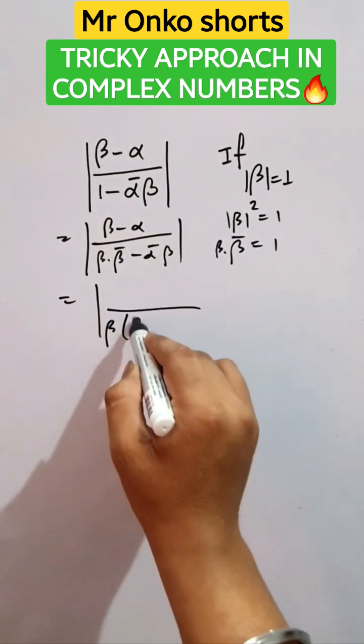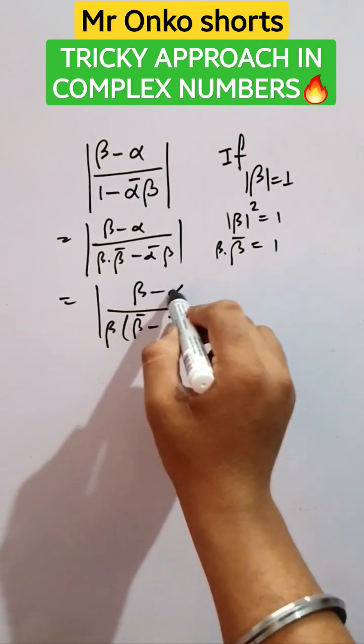So beta taken common, it will be beta bar minus alpha bar, and the top part will be alpha minus beta minus alpha mod.